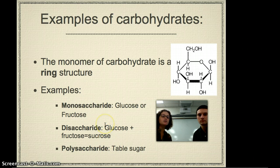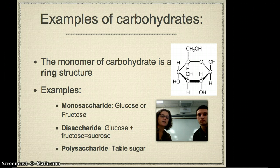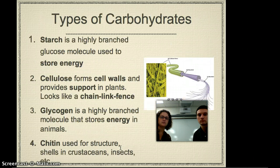If you keep gluing monomers of carbohydrates together, you get a very large polysaccharide. And we have an error here — instead of table sugar, you can think of things like starch that you might find in pastas. So some types of carbohydrates that are important to note: starch is the first one.